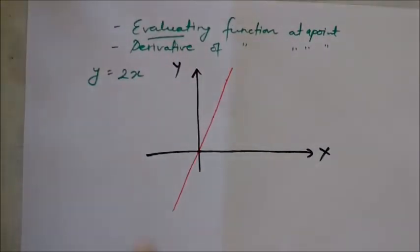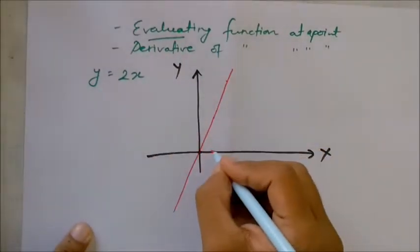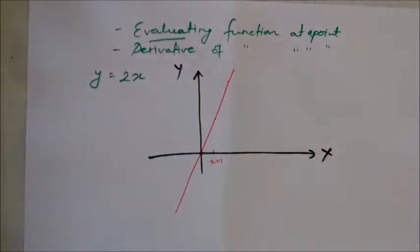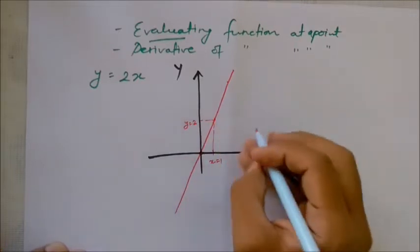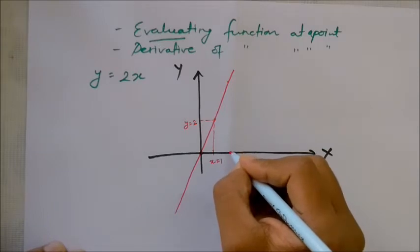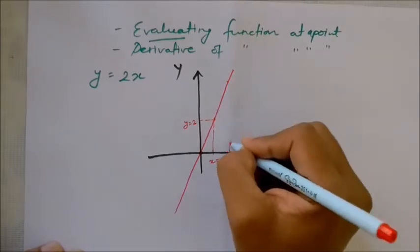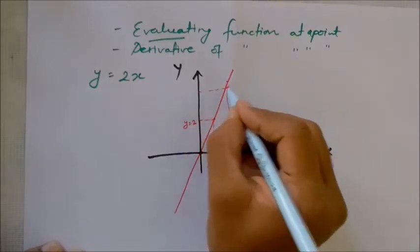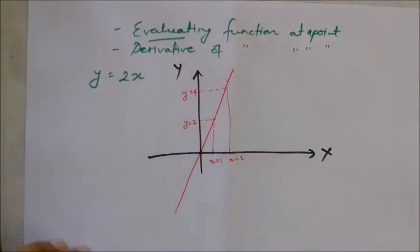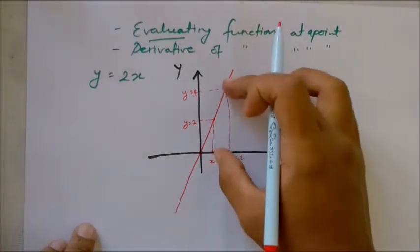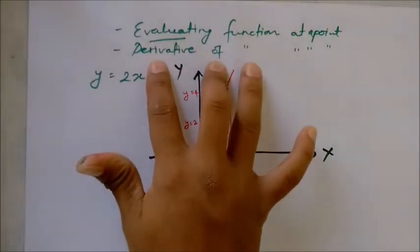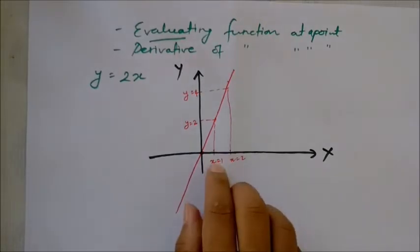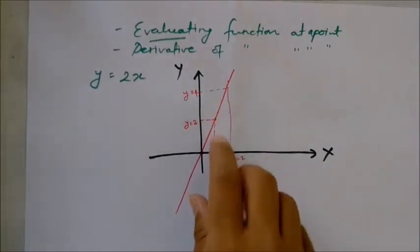Evaluating function at a point means: if we give x a value — suppose x equals 1 — then y has a corresponding value. If x equals 2, then y equals 4. Giving x a value as input and finding y is called evaluating a function. That is different from the derivative of a function.